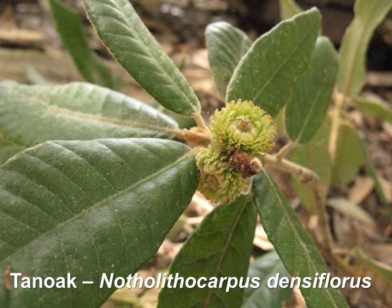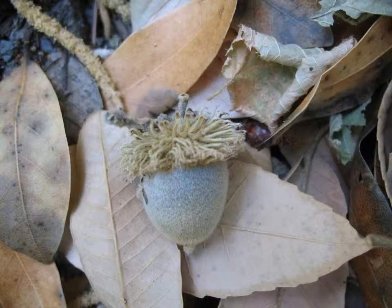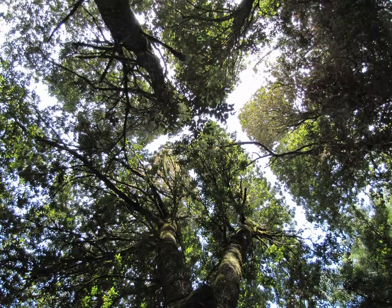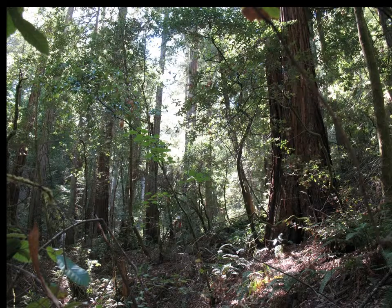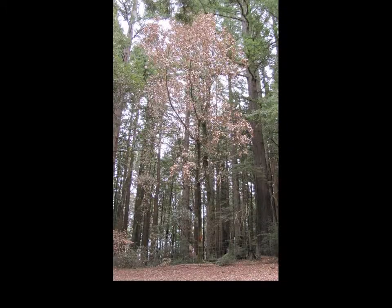Tanoak is a broadleaf evergreen hardwood related to oaks. Like true oaks, it forms a nut called an acorn. Tanoak's range is restricted to California and Oregon, where it often grows in association with coast redwood and other conifers. It is very susceptible to sudden oak death, caused by the microorganism Phytophthora remorum.